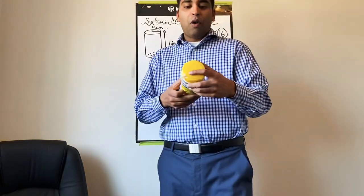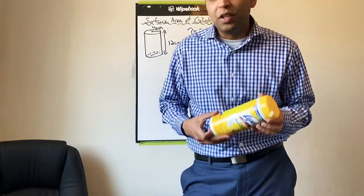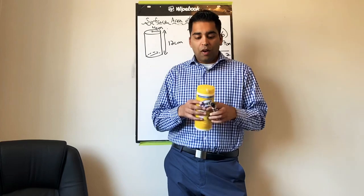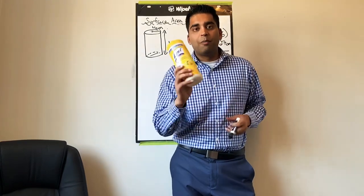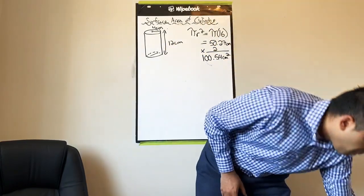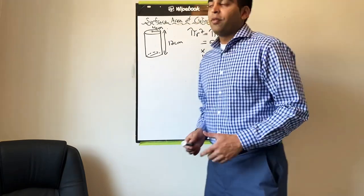So the top part and the bottom part of the cylinder is taken care of. Now we're going to move on to the vertical surface, the body of the cylinder, and it kind of relates to circumference.